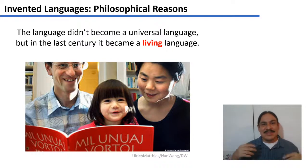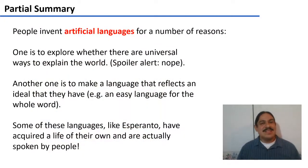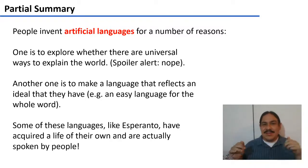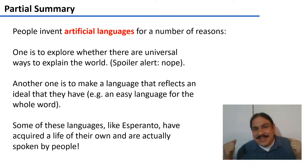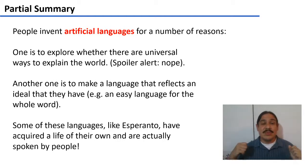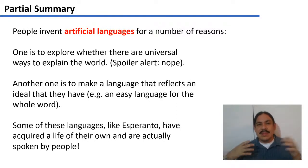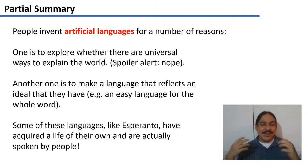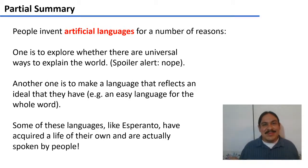Today you can find Esperanto in many places — there's a Wikipedia in Esperanto, and you can learn it online. To summarize: people invent languages to explore whether there are universal ways of classifying the world (spoiler: there aren't — Wilkins tried), or to make a language that reflects a philosophy or ideal, like Esperanto. Along the way, some of these languages acquire a life and following of their own and eventually become languages people actually speak. In the next video, we're going to look at a few more examples of artificial languages.